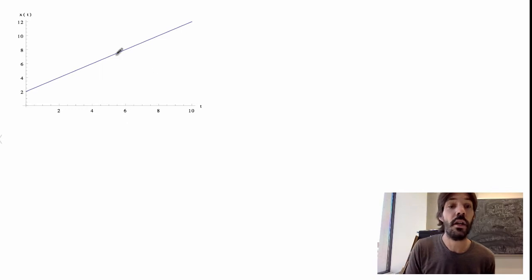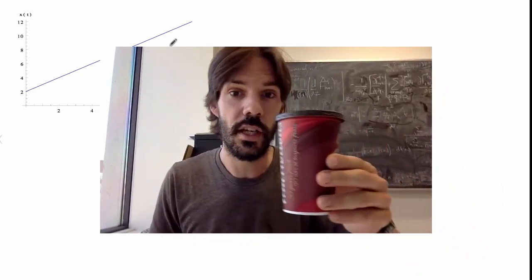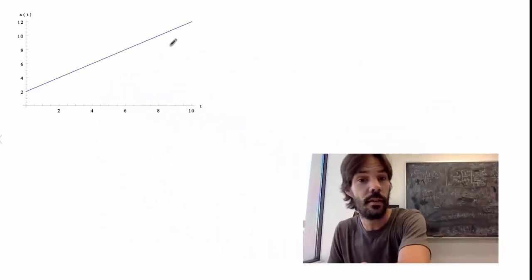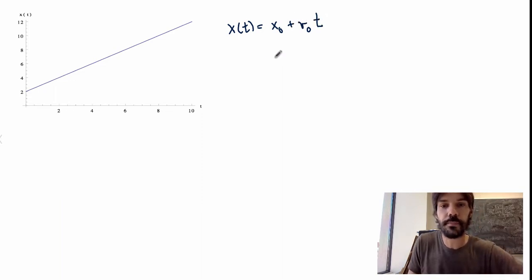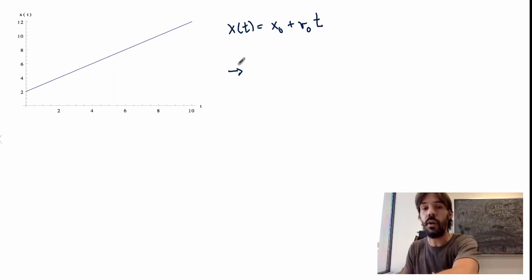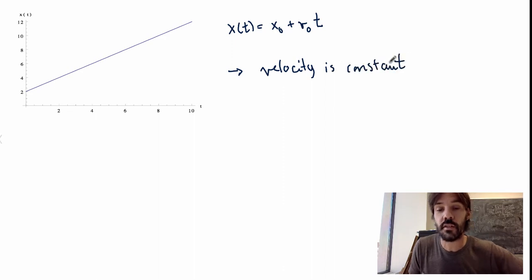Let's look at a more complicated example where the position is described by an increasing line. Physically, my object is moving at a constant rate. Mathematically I would write the function as x of t equal to x0 plus v0 times t, where x0 and v0 are constants. Now if I ask you what the velocity is, what you know is that the velocity is constant, because the position of the object is increasing linearly — though you don't know exactly what constant it should be.